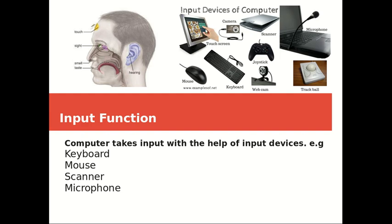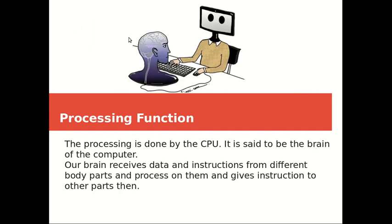We provide different types of data — textual type, images, and other data. Humans receive input from the surroundings through sense organs; the brain processes all the data and instructions. The CPU, the brain of the computer, also processes the input and transfers it into meaningful information.